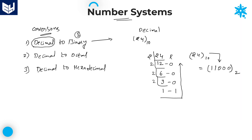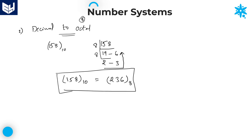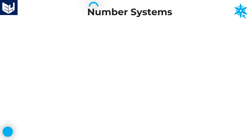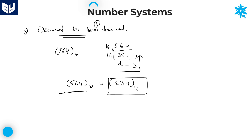To summarize: to convert decimal to binary, divide by 2; to convert decimal to octal, divide by 8; to convert decimal to hexadecimal, divide by 16. In the next session we will discuss more conversions. I hope you enjoyed the session — thanks for watching.